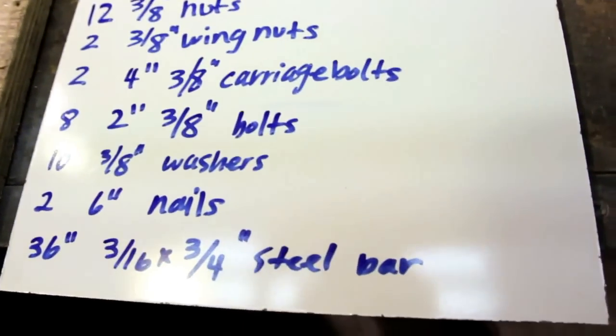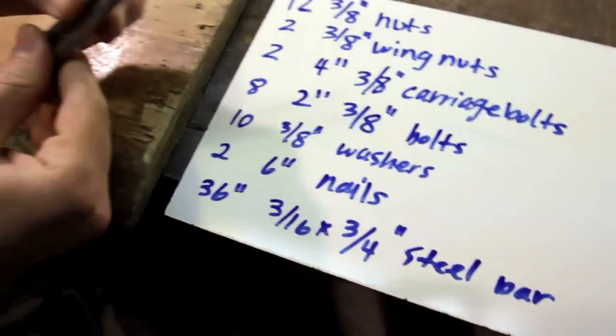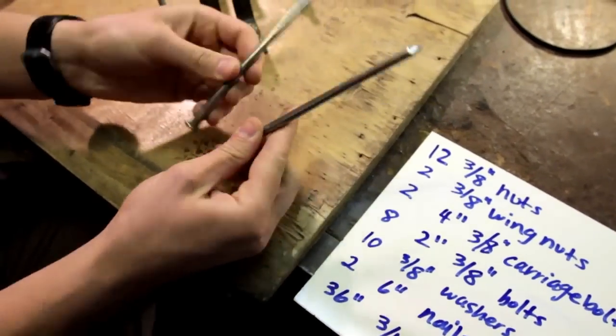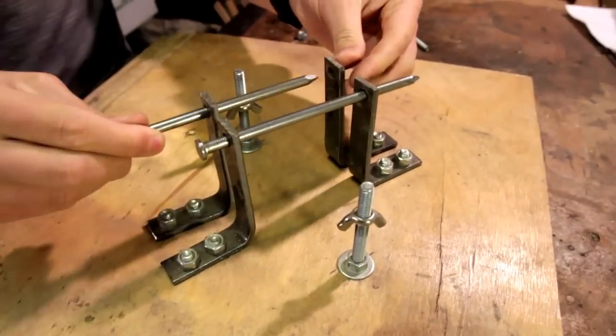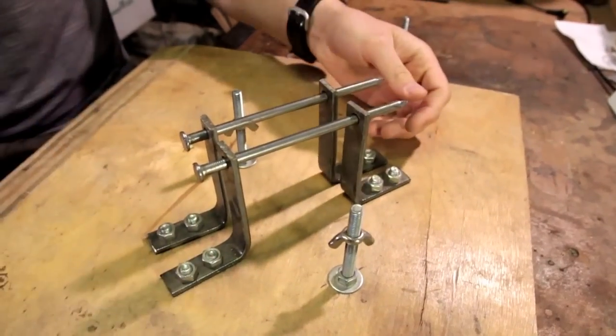Then you're going to need 2 6 inch nails. That's what these guys look like. They're going to be used to make the actual trigger mechanism and the mechanism that holds the bottle in.